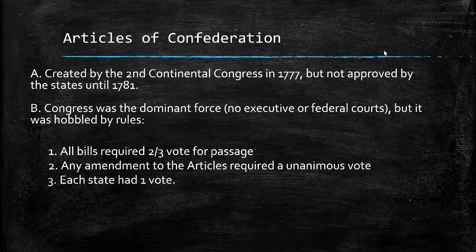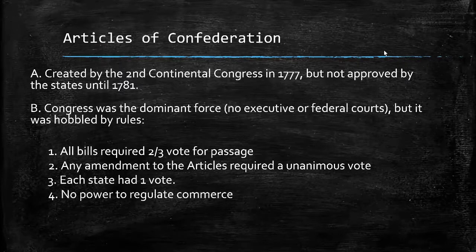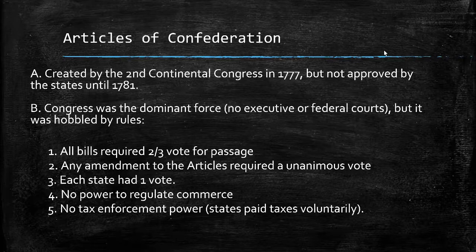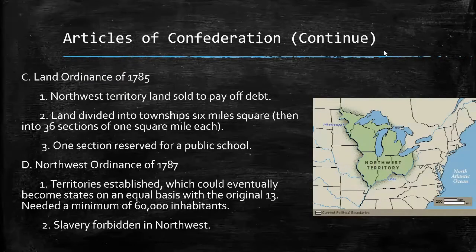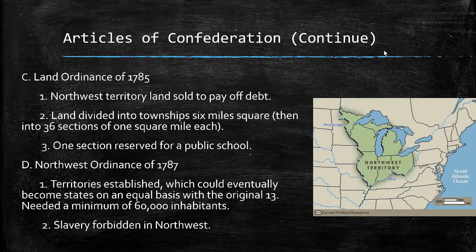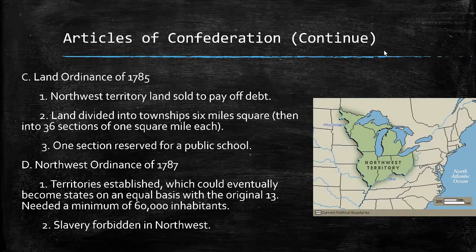Economically, the government created quite a mess, as there were no powers to regulate commerce, so states could put different tariffs on foreign products and even tariffs on products traded between states. Finally, it had no power to tax — the government could only request states pay taxes to the national government. There were a few successes, though. The Land Ordinance Act of 1785 and the Northwest Ordinance of 1787 both helped to organize the Northwest Territories. A really key aspect was that slavery would be forbidden in the Northwest. It also helped to have the support of a Virginian, Thomas Jefferson. There would be no chance this would pass in the early-to-mid 1800s in the run-up to the Civil War.